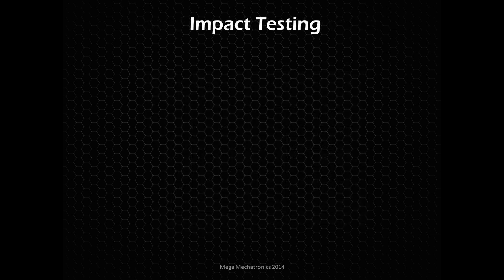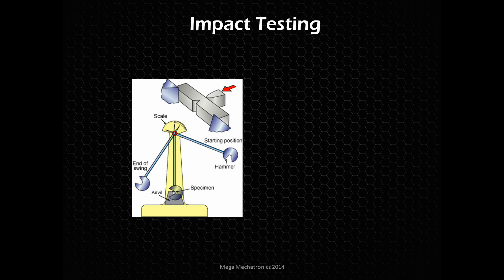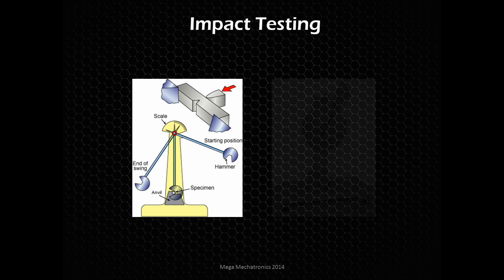To quantify toughness, we do impact testing. Here is a Charpy impact test — a pendulum swings down, hits the material, and we measure the backswing to see how much energy was absorbed. If we free-swing the hammer without the specimen, it swings up to a certain height. If we put something in the way, it'll break through, but the material absorbs some of that energy, and the pendulum won't swing as high — that's how we get the amount of energy absorbed.